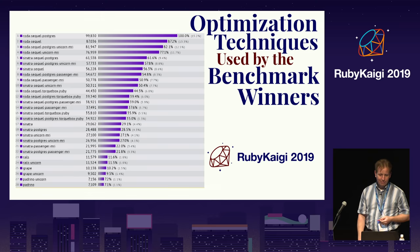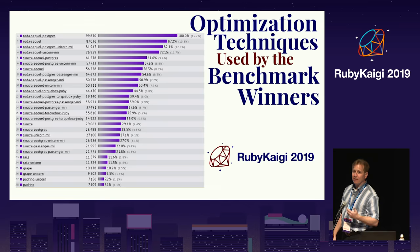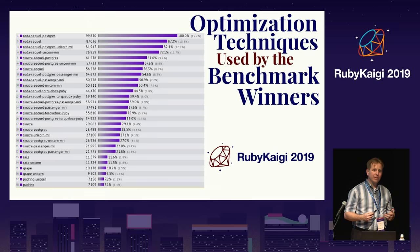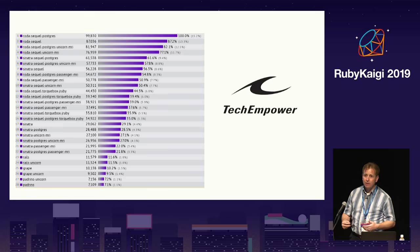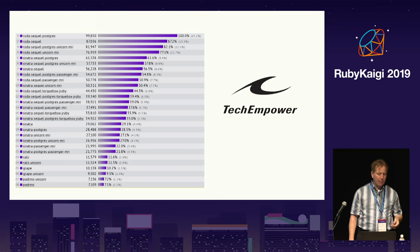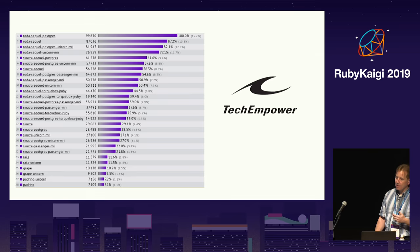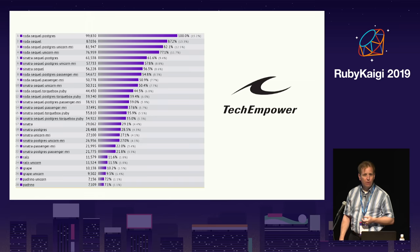Today I'll be discussing some optimization techniques used in Sequel and Roda, providing some background on why these libraries are significantly faster than their alternatives as shown in TechEmpower's independent benchmarks. TechEmpower has been benchmarking web frameworks in many languages since 2013. They have been benchmarking Rails and Sinatra since the beginning, and in 2017 they started benchmarking Sequel with Roda, and since then the combination has been leading TechEmpower's benchmarks for Ruby web frameworks.